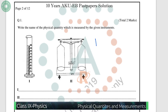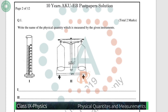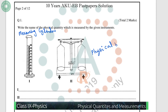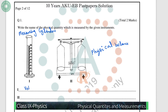In this paper, question number 1 is from physical quantities and measurement. The question is: write the name of the physical quantity measured by the given instrument. The first instrument is the measuring cylinder, which is used to measure volume, and the second is the physical balance, which is used to measure the mass of any substance.